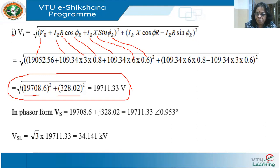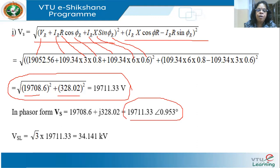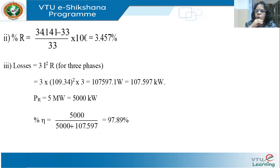Writing in phasor form: VS = 19,708.6 + j328.02 V, which gives a magnitude of 19,711.33 V at an angle of 0.953°. This is the line-to-neutral voltage. Multiplying by √3 gives the line voltage VS(line) = 34.141 kV. The angle does not get multiplied by √3 — only the magnitude does. The percentage voltage regulation is (34.141 − 33) / 33 × 100 = 3.457%, higher than in the previous example because the power level is greater, leading to more current and more voltage drop.